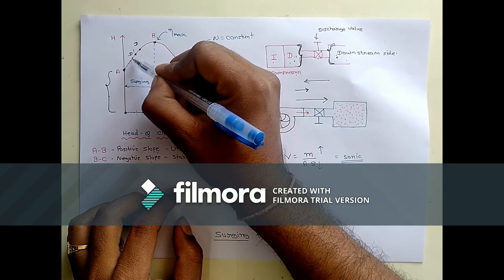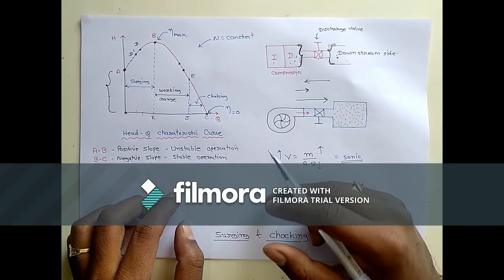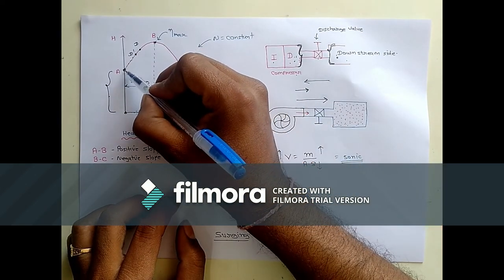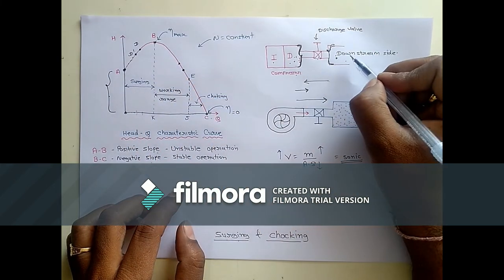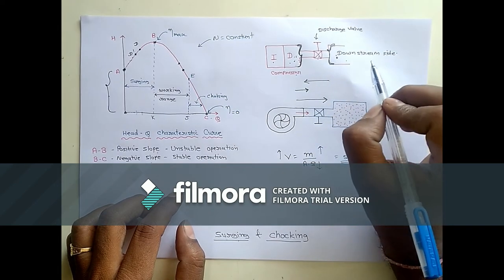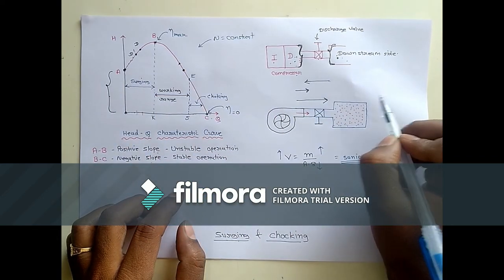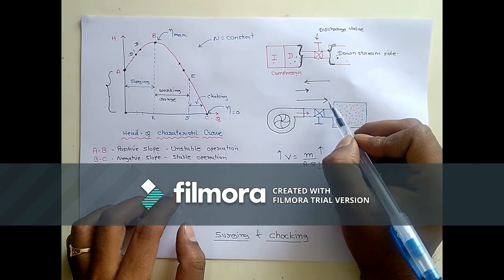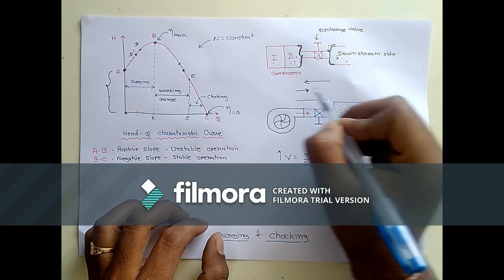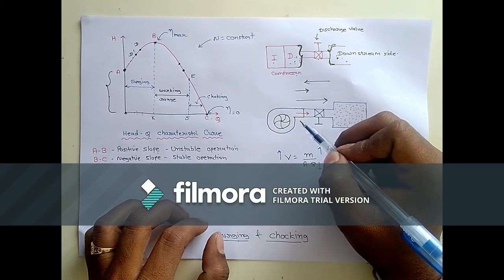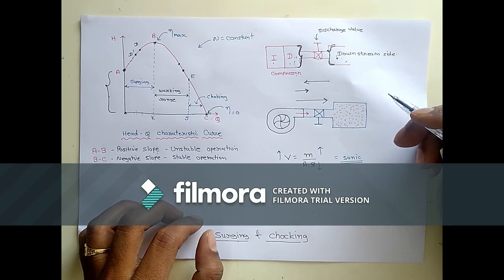Now the discharge is low and we are getting additional flow from the reverse direction, so discharge decreases further and pressure also decreases. It will decrease down to point A, beyond which the pressure will not decrease because the impeller imparts some energy. So reverse flow is possible only up to point A. As the downstream side pressure drops gradually, when the downstream pressure becomes lower than the pressure at A, the flow will again go in the forward direction because the compressor side pressure is now higher. This to-and-fro motion of the air is known as the surging process.